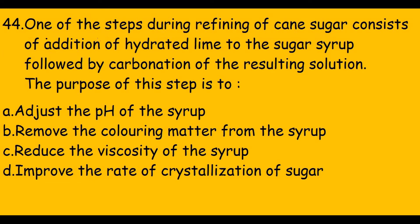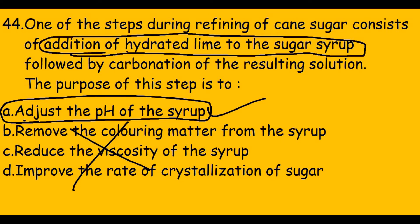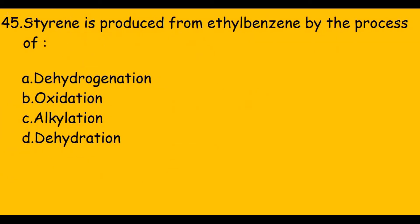This question asks: one of the steps during refining of cane sugar consists of addition of hydrated lime to the sugar syrup followed by carbonation of the resulting solution. The purpose of this step is to adjust the pH of the syrup — that first option is correct, the rest are incorrect. Hydrated lime is added to the sugar syrup in order to adjust the pH. This was asked in GATE 2001.